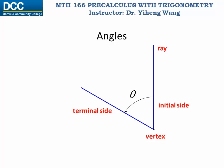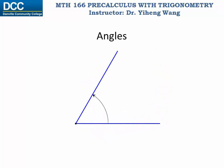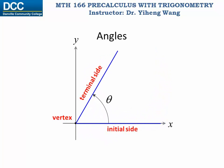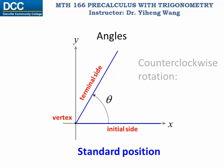Now we want to put this angle in a rectangular coordinate system, with its initial side falling on the positive half of the x-axis and its vertex falling on the origin. When an angle is placed in this position, it is known as the standard position for this angle. And if this angle was created by rotating the ray counterclockwise, this angle is known to be a positive angle.